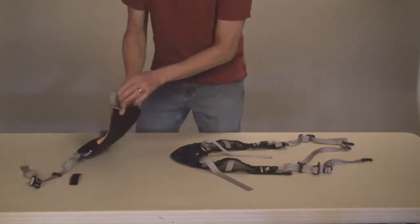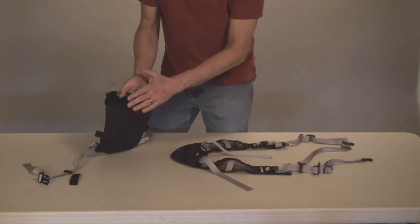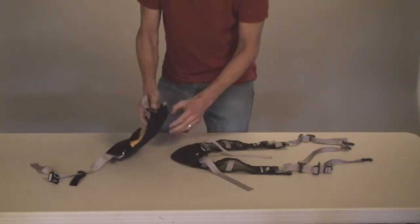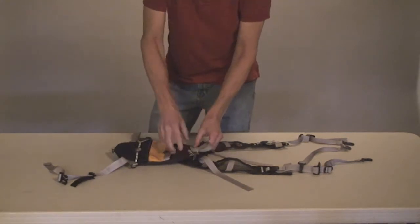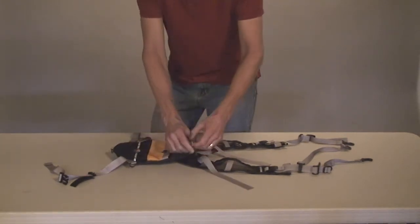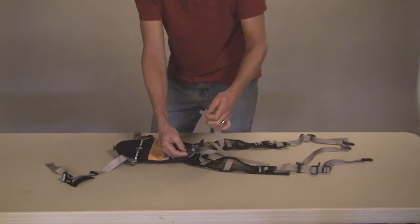If you look at the back of the pouch here, it's got Velcro here and Velcro here. What you want to do is mate those up, and that holds them together initially. Most of the strength, though, is derived from this buckle.